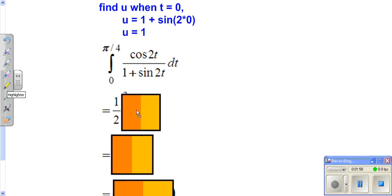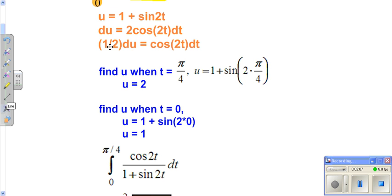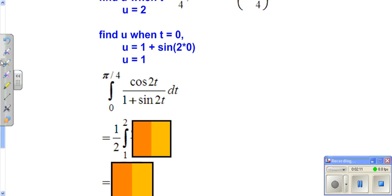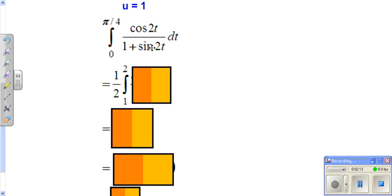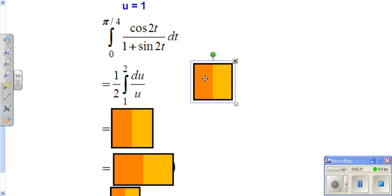Our lower limit is 1. Our upper limit is 2. Now, you might be wondering, where does that one-half come from? That comes from du being one-half du. And remember, you can pull your constants in front. We had said the bottom was our u. The 2 cosine 2t dt was our du.